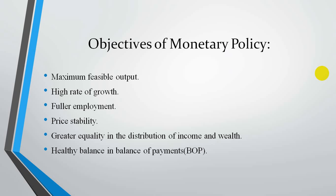The first objective is to ensure sufficient output to maintain the demand and supply balance. The second objective is a high rate of growth. With the amount of money in the economy, business activities run, people get employed, they gain purchasing power, they demand goods, and ultimately those goods flow in the economy — so the rate of growth is governed by monetary policy.